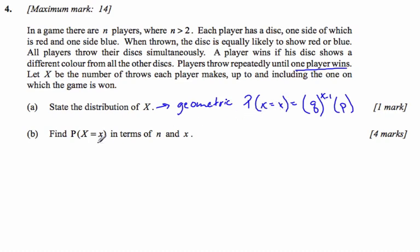If I go to part b, if I want to find in terms of n and x the probability of x being x, we need to find the probability p. What's the probability of winning a game? The probability to win, which is p.